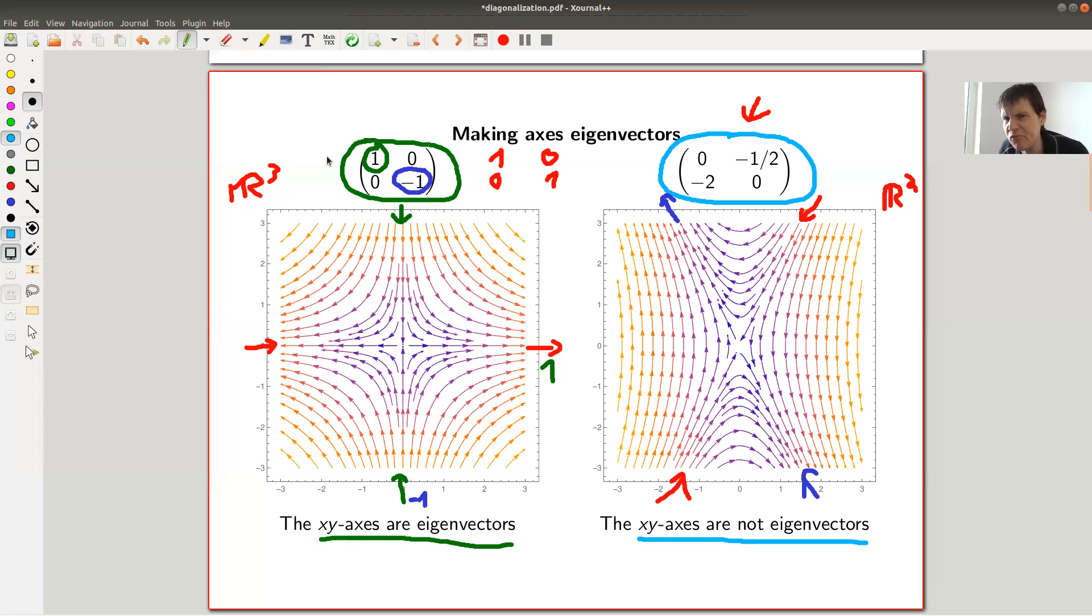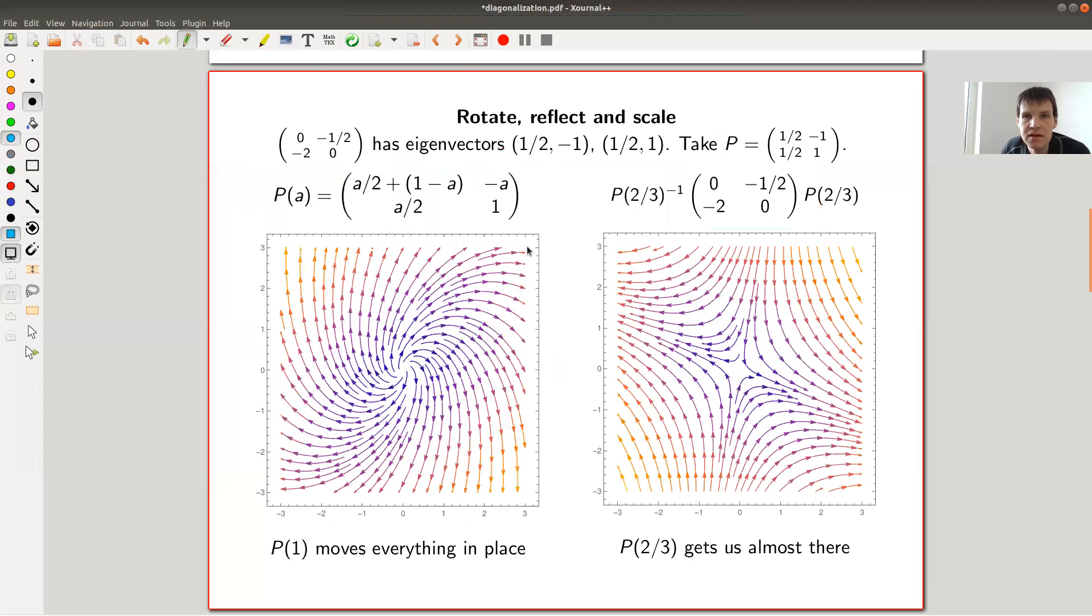The question is, given the matrix in the wild like this one, can you find axes - can you find kind of rotation, scaling or whatever - such that the eigenvectors actually become axes, so the X-Y axes are eigenvectors? Does this actually work? Why does it make sense?